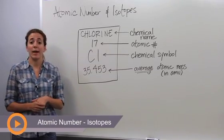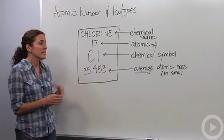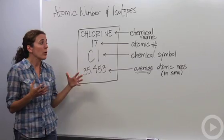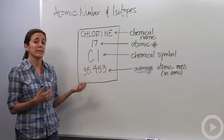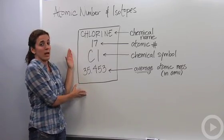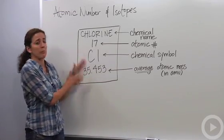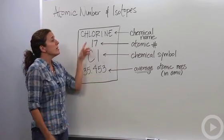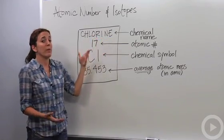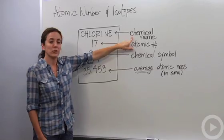We're going to talk about the atomic number and isotopes. On the periodic table, you might see a lot of things that are confusing to you. I'm going to help you go through the periodic table and tell you what exactly you're looking at. Here is the element chlorine as you might see it on the periodic table — I just kind of blew it up so we can talk about what these numbers mean. Chlorine is its chemical name, though it may not appear on every periodic table depending on which one you're looking at.